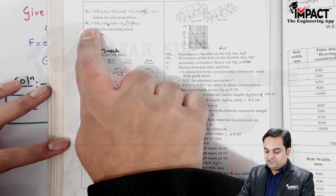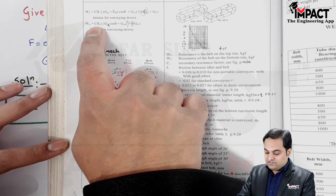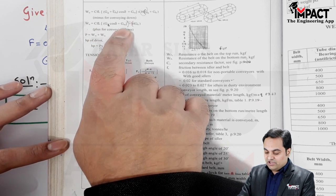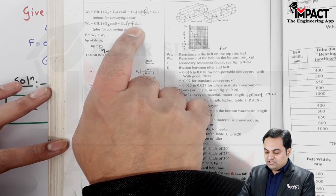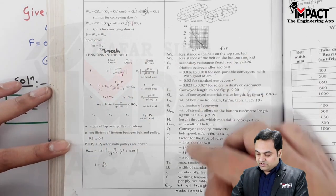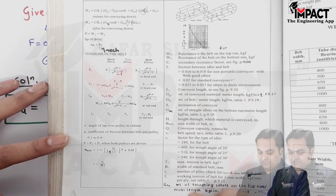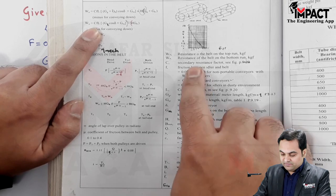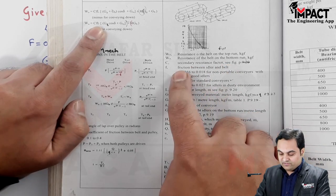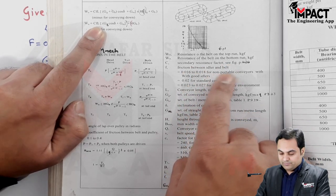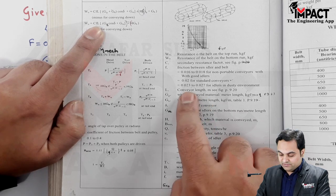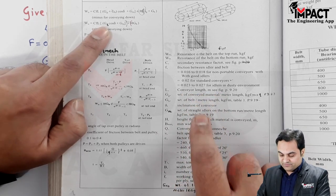Then cfl, gb, gru, G suffix b - all these terms are given here and I have written that in the data as well. C is the secondary resistance factor, f is the friction between idler and the belt, L is the conveying length in terms of meters, G suffix b...